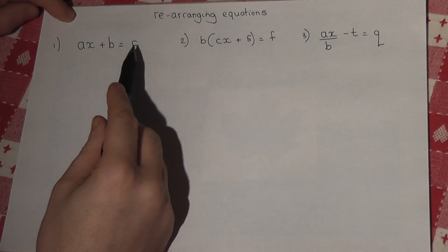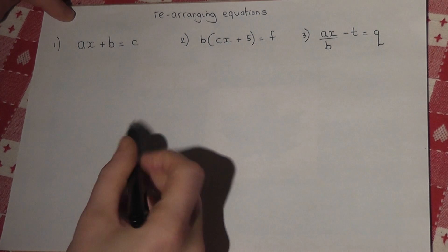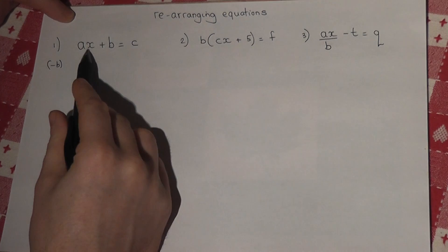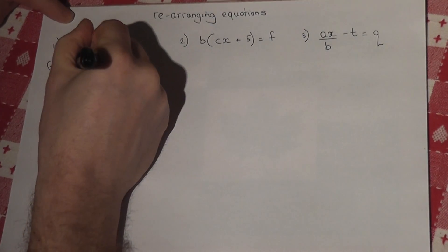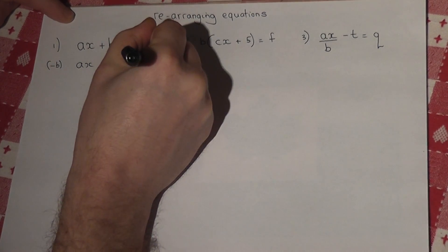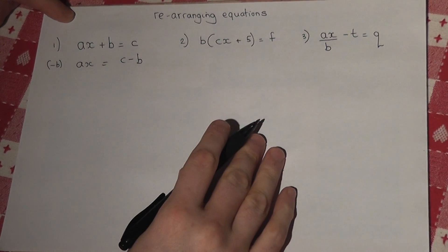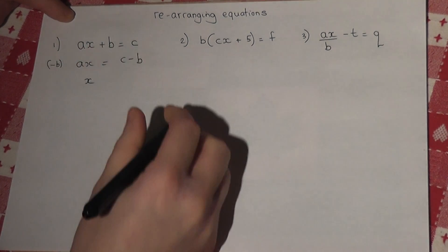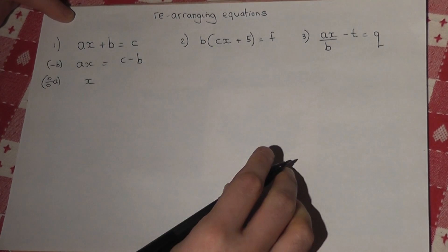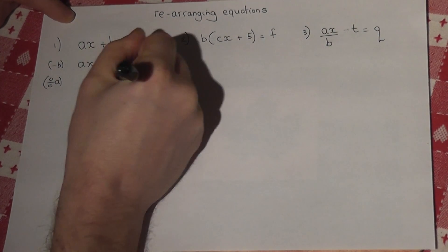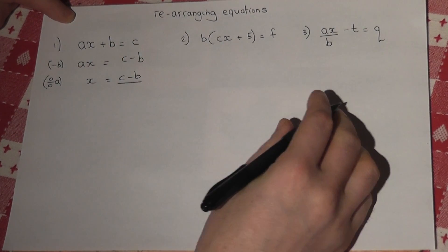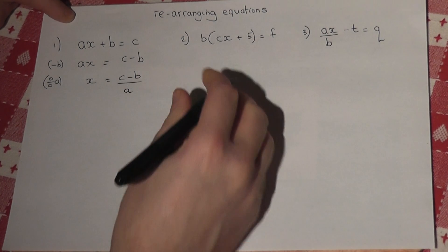So to get x by itself, we go for the normal equation solving steps. So I would begin by subtracting b to get the x term by itself. So ax would equal c take away b. And then to get x alone, I divide by the coefficient of x, which is a, so x just equals c minus b. I put a big division sign, and I've divided by a, so it's all over a.